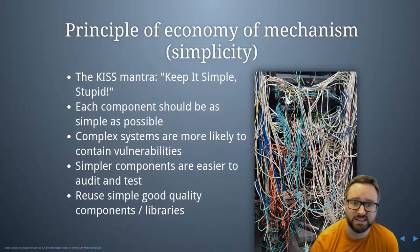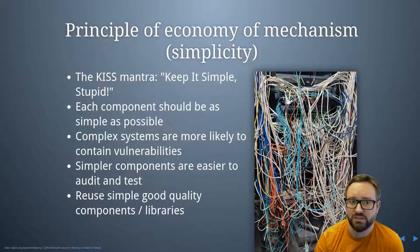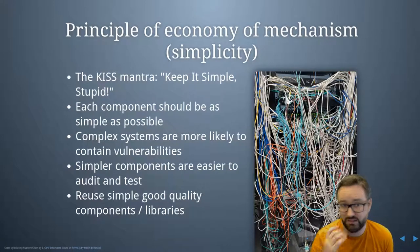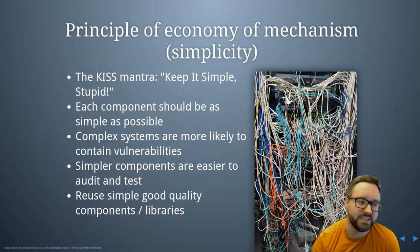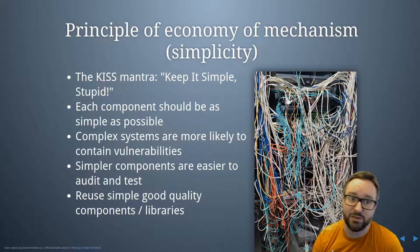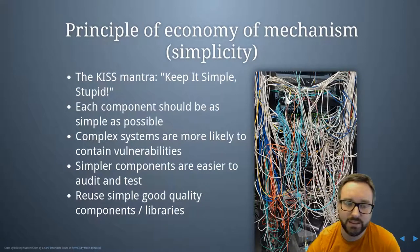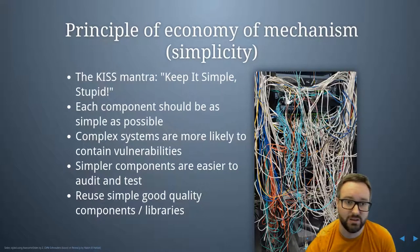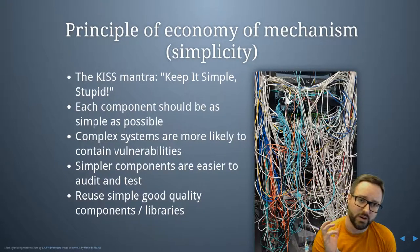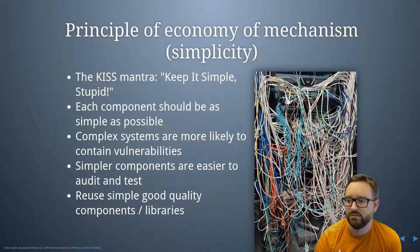The principle of economy of mechanism is all about simplicity — the KISS mantra: keep it simple, stupid. Each component should be as simple as possible, because the more complicated a system is, the more likely there's going to be a vulnerability somewhere. Consider just the number of lines of code: if you give a programmer 10 lines to review they'll point out 10 things to improve, but give them 100 lines and they'll probably say it's all fine. Simpler components are easier to audit and test.